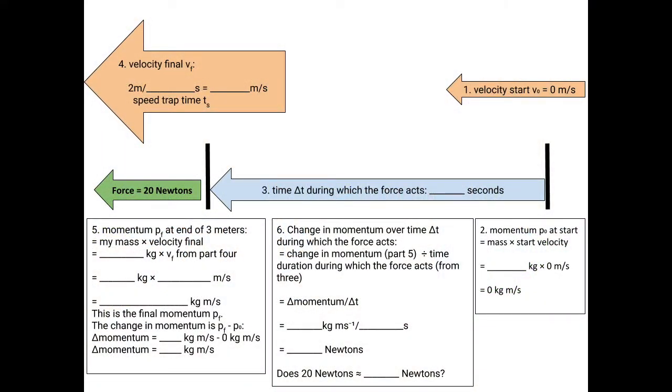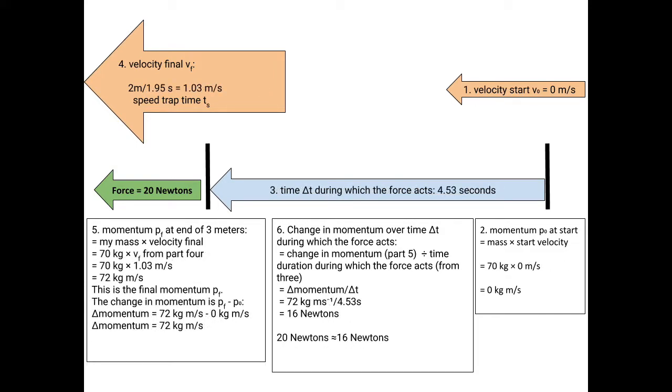This is a worksheet that we used with blanks. Here at the upper right, you can see that my starting velocity was 0 meters per second. That's number one. Calculation number two: the momentum at the start, which is my mass, about 70 kilograms, times my starting velocity of 0, is 0. I started with a momentum of 0.